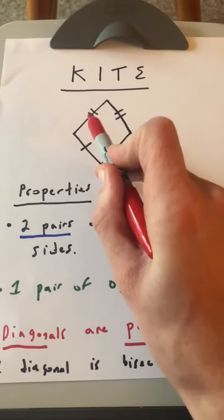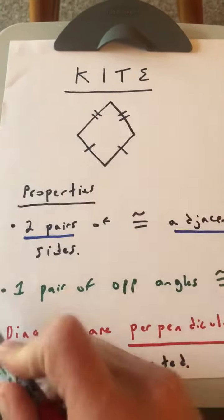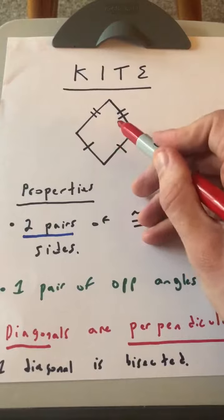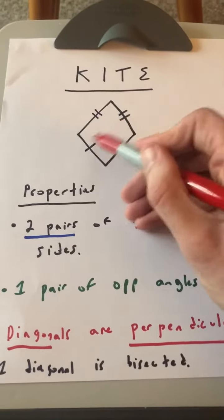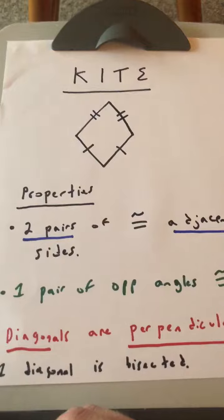So these two sides are congruent, and these two sides are congruent. Note that the opposite sides of a kite are not congruent. So the sides across from each other are not going to be congruent.